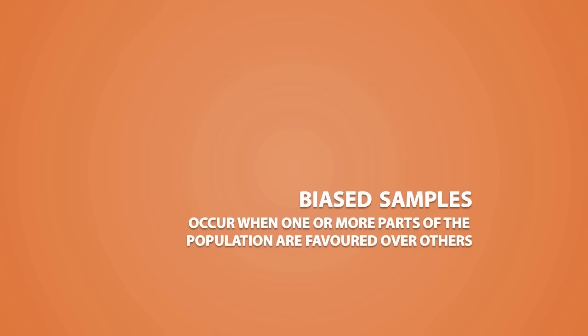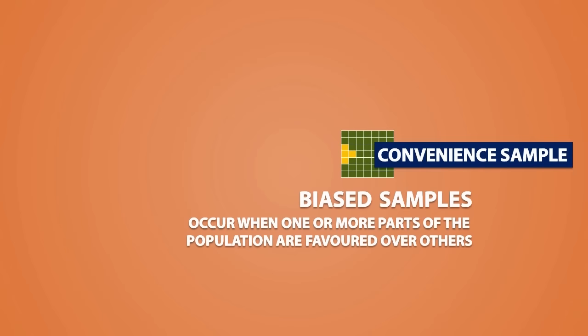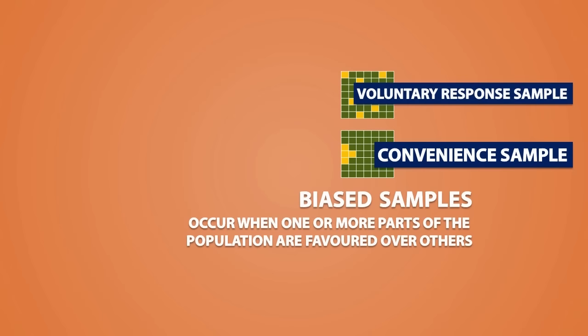But first, let's look at the types of biased samples. Biased samples occur when one or more parts of the population are favored over others. The two types of biased samples include the convenience sample and the voluntary response sample.